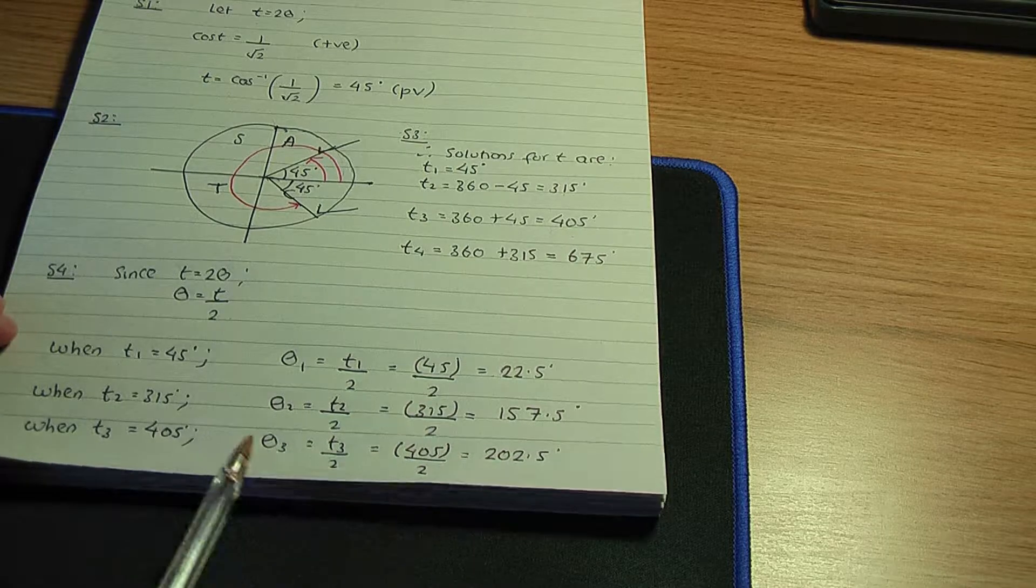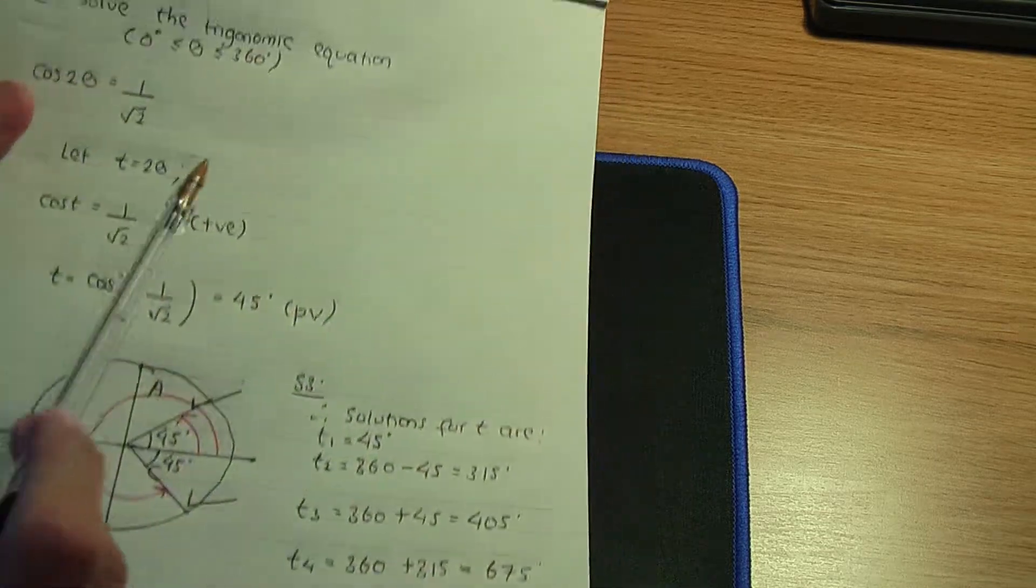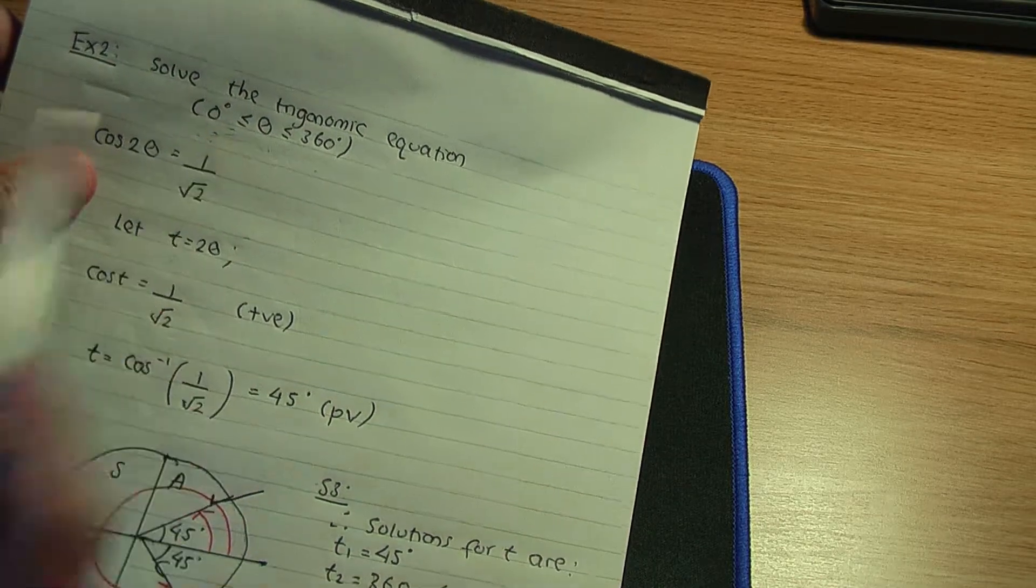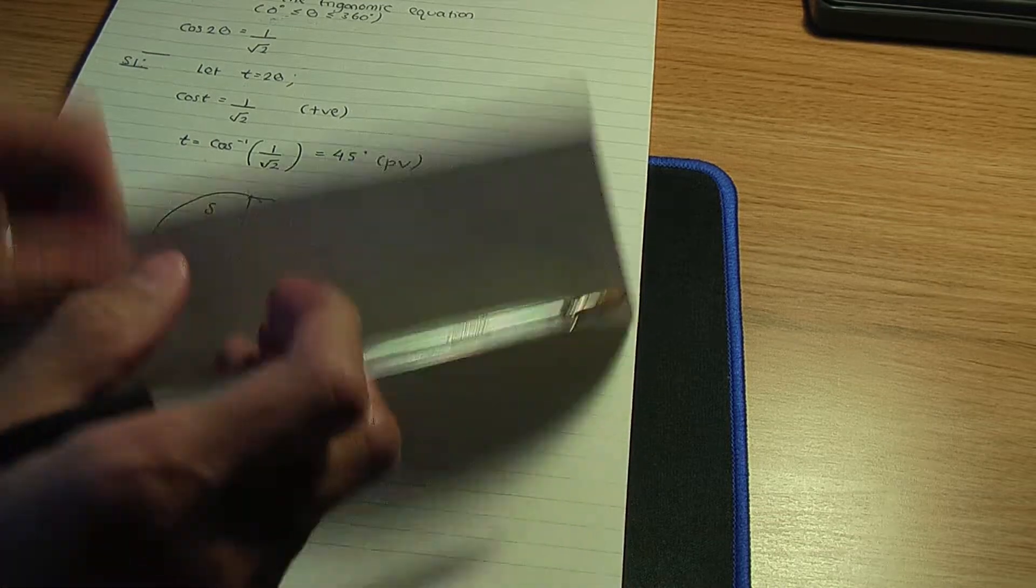Again, remember this value is theta. θ3 is within our range, between 360 and 0. So let's end with the last value.